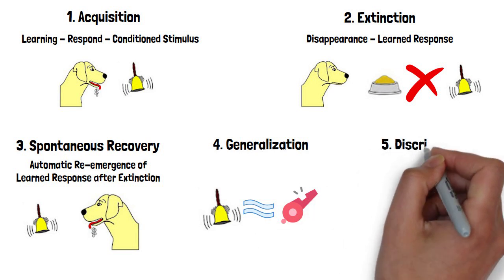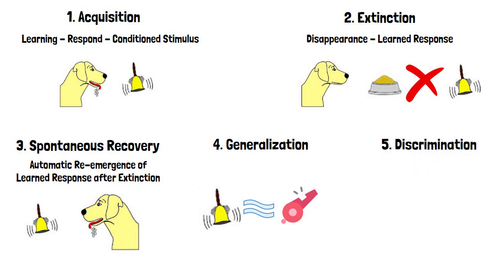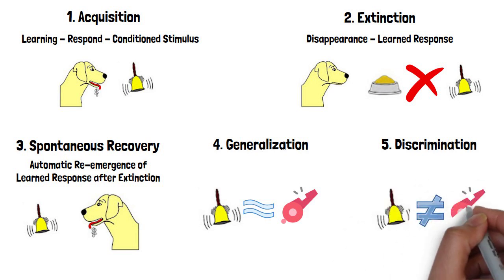5. Discrimination, it is the ability to differentiate between a conditioned stimulus and other similar triggers.